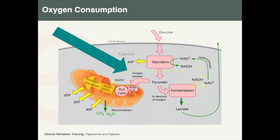Every cell in the body requires oxygen for cellular metabolism. Lack of oxygen results in cell death, tissue death, and eventually dysfunction of organs. The rate at which oxygen is removed from the blood and consumed by cells and tissues is known as oxygen consumption.